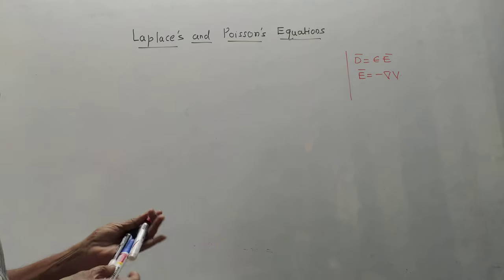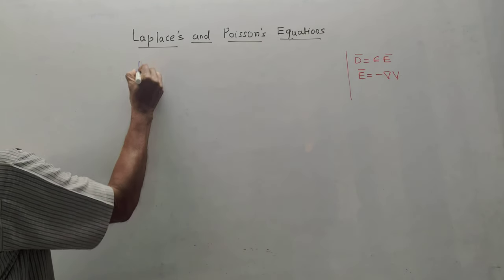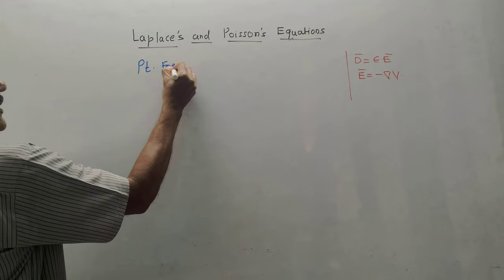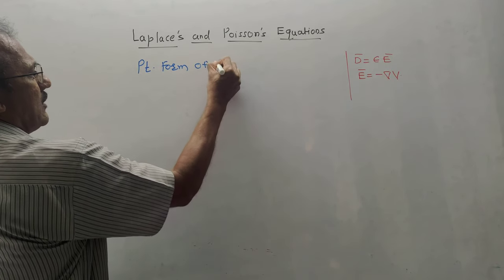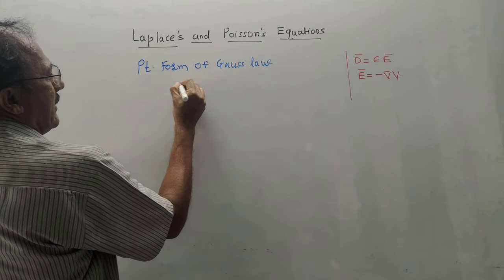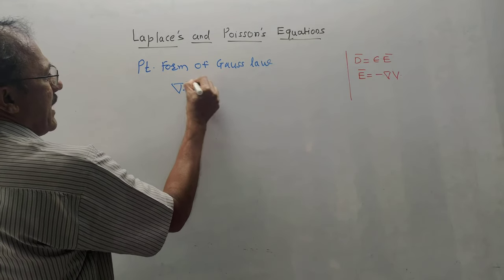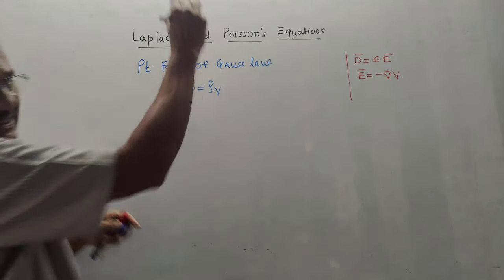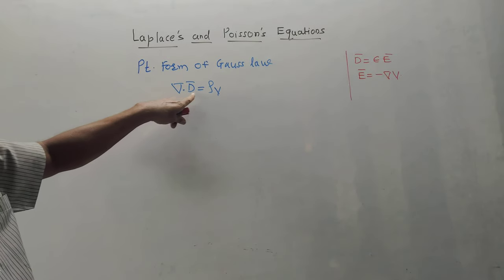The derivation starts with the point form of Gauss law. According to Gauss law, we have ∇·D̄ = ρV, where ρV is volume charge density.